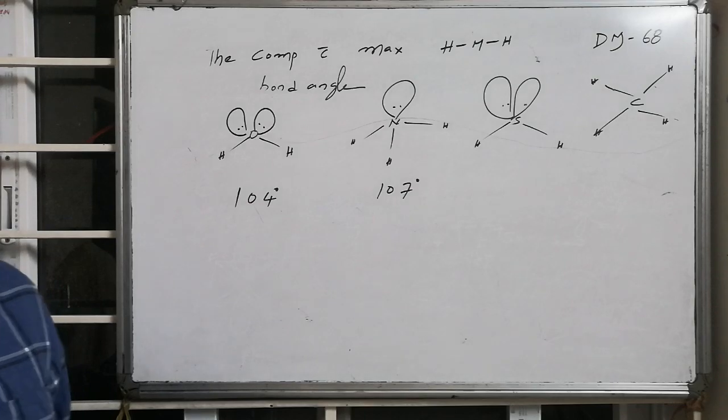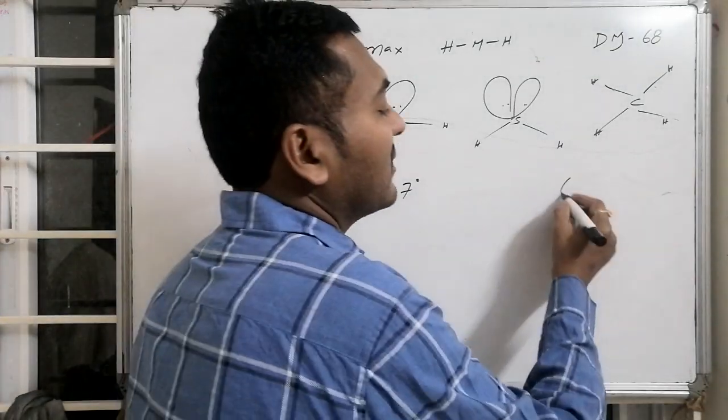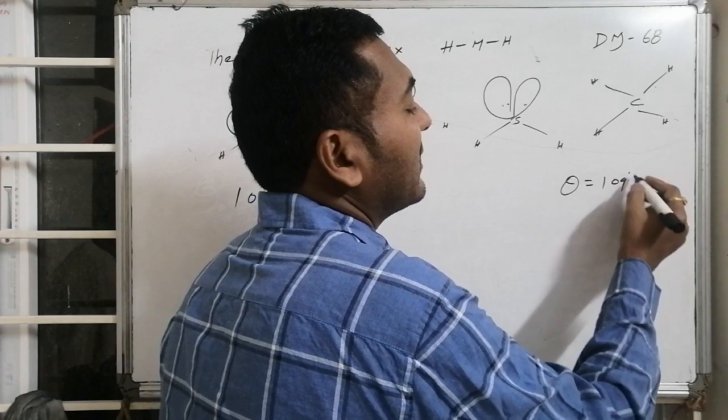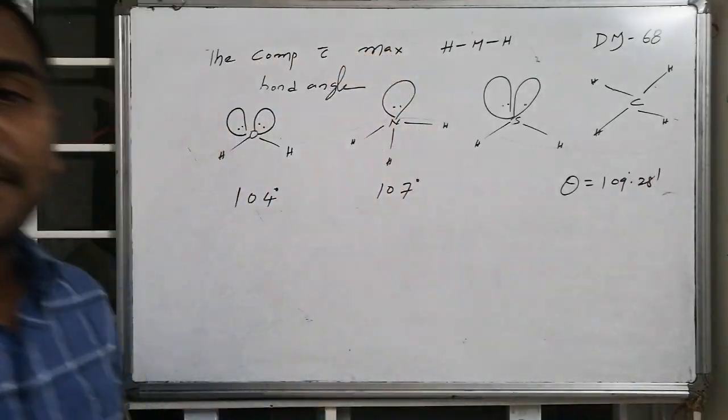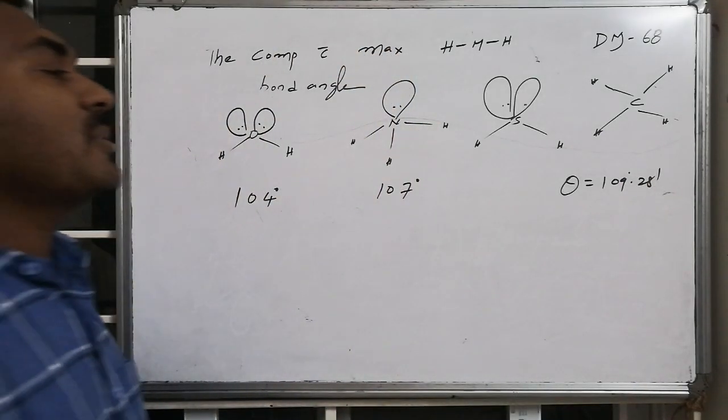Whereas if we go for the carbon present in methane, a regular bond angle is maintained. That theta is found to be 109 degrees 28 minutes.